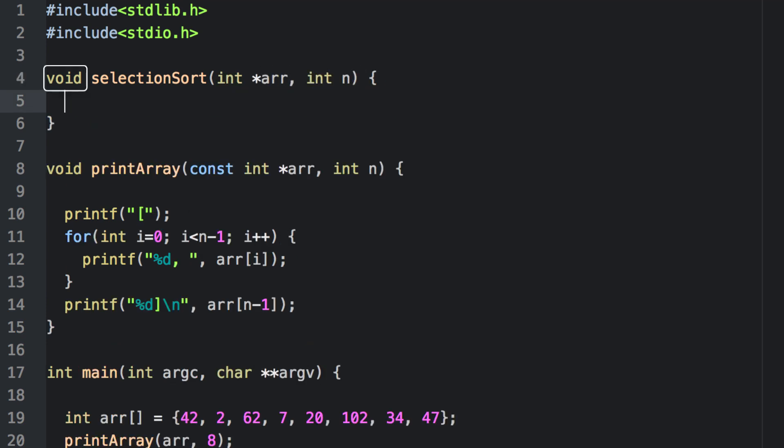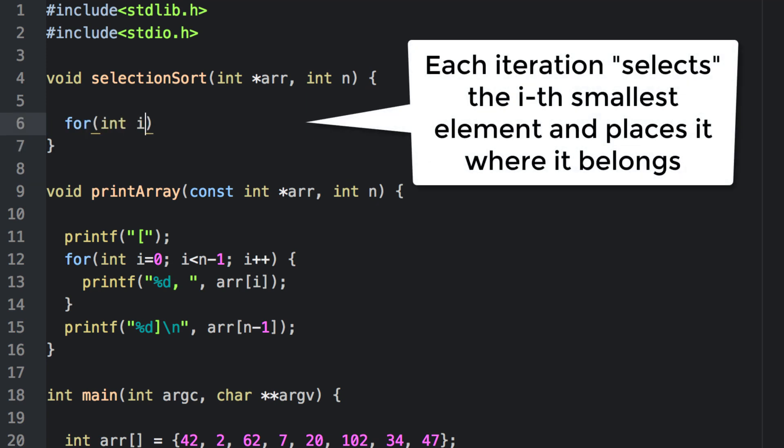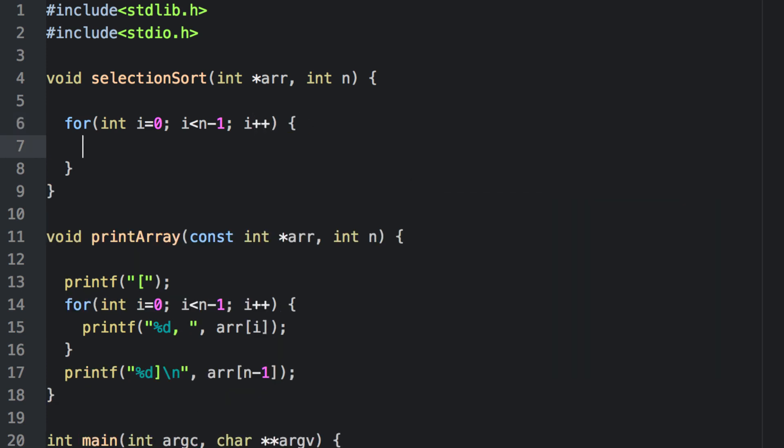It's a void function because we're going to be making changes to the given array and not returning anything. The array is no longer const because we will be making changes to it. First, we'll need an outer for loop. It'll start at i and go up to the second to last element. That's because if we've already sorted the first n minus 1 elements, then we don't need to sort the last element—it's already where it needs to be.